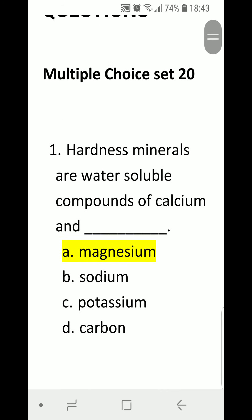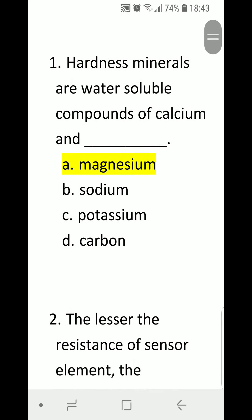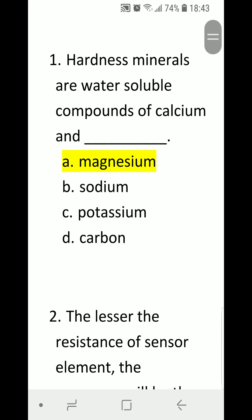Moving right away with number one: Hardness minerals are water-soluble compounds of calcium and blank. Correct: A. magnesium, B. sodium, C. potassium, D. carbon. Correct answer is A. magnesium.